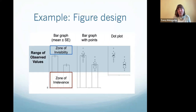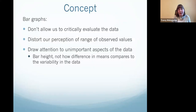I'm going to walk through the various versions I went through to design a specific figure. My concept was to show that bar graphs don't allow us to critically evaluate continuous data, that they distort our perception of the range of observed values, and that they draw our attention to unimportant aspects of the data — specifically the height of the bar, rather than the overlap between groups and how the difference in means compares to variability. This is already quite a bit of message for a single figure, so I knew I'd need many versions.